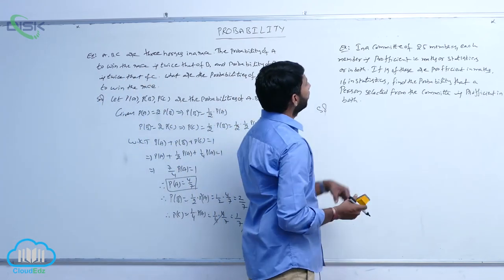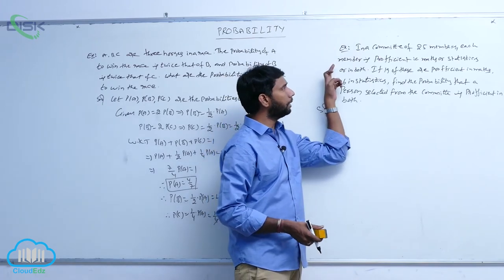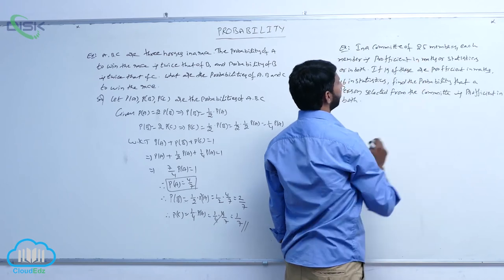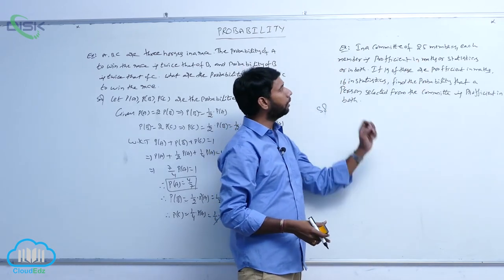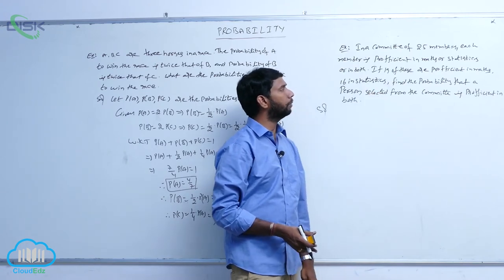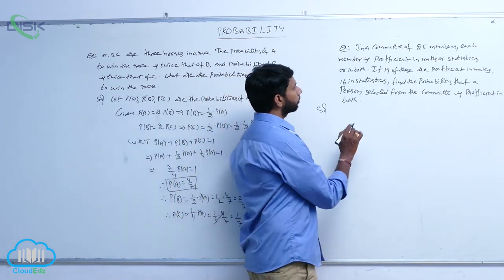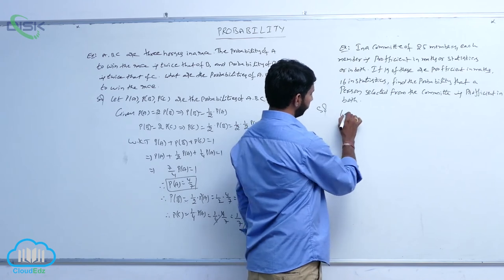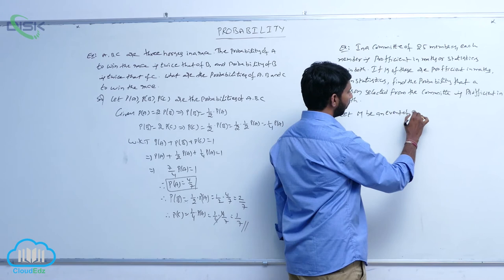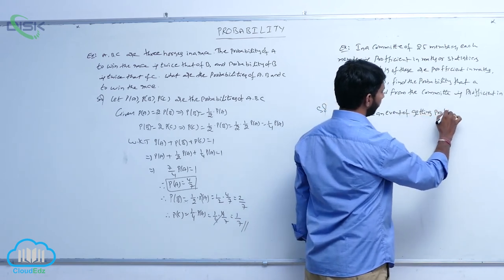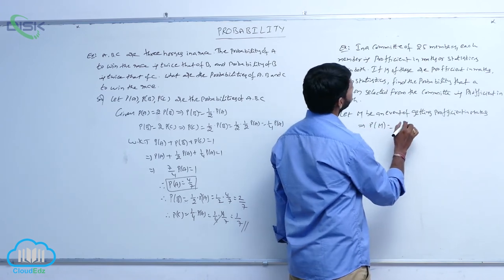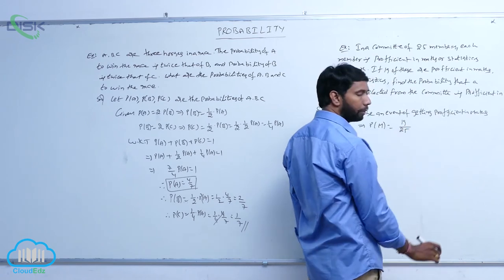In a committee of 25 members, each member is proficient in either mathematics or statistics or in both. If 19 of these are proficient in mathematics and 16 are proficient in statistics, find the probability that a person selected from the committee is proficient in both. Let M be the event of getting proficient in mathematics. P(M) is equal to 19 by 25.